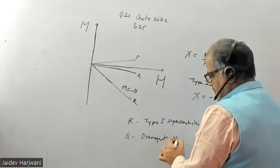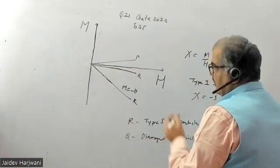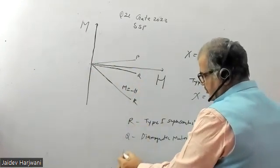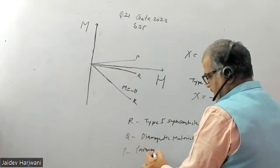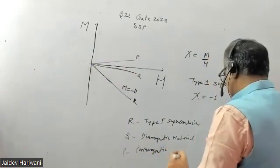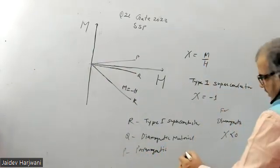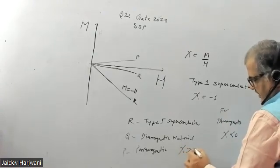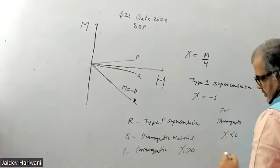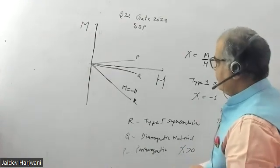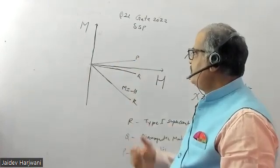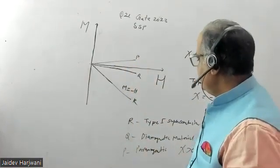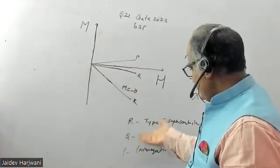And P is your paramagnetic material, because for paramagnetic material susceptibility is positive but very small. So this is positive but chi is a very small value. This positive slope will correspond to your paramagnetic material.